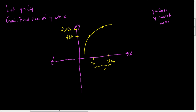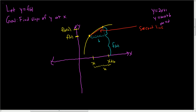Then what we do is we draw a line that connects these two points. This line is called a secant line — it's just the line connecting those two points. We find the slope of the secant line. Slope is rise over run, so the run is clearly h. We know that this distance here is f of x, and this bigger distance here is f of x plus h. That means the rise is going to be the big distance minus the little distance: f of x plus h minus f of x.